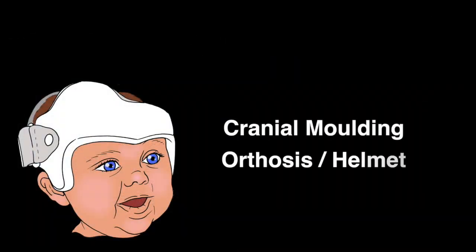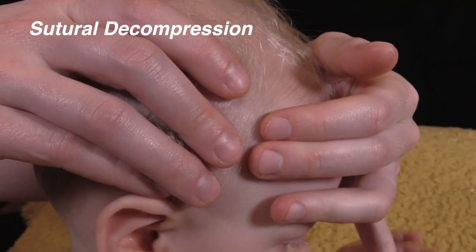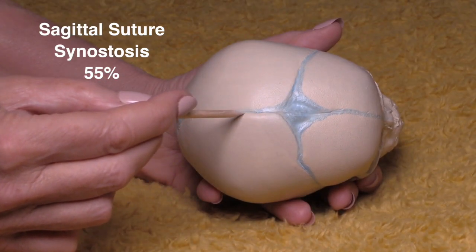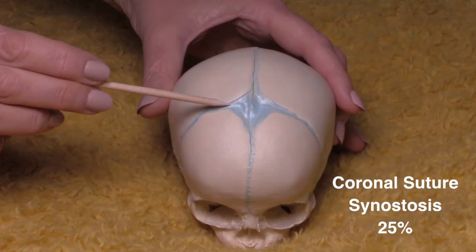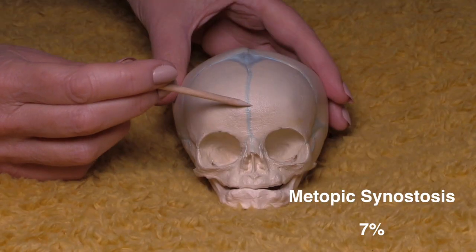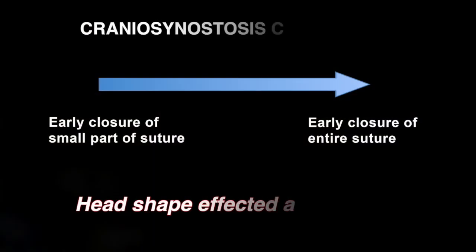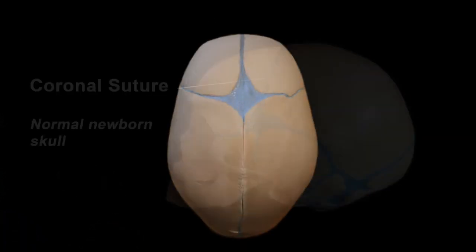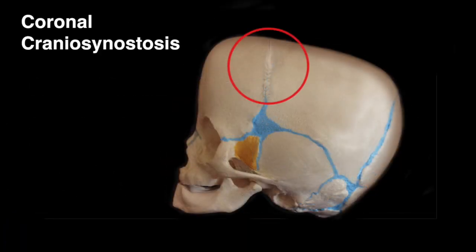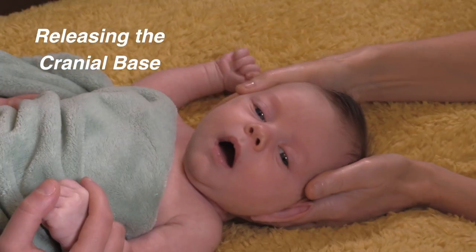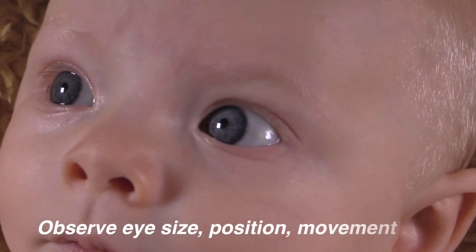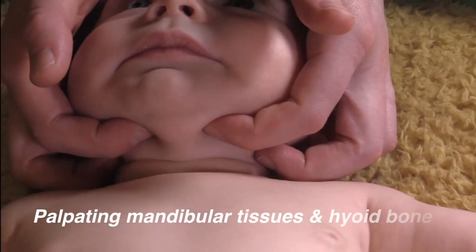Through unique visual material and live-action shot on our real-life babies, we explore the definition, etiology and typical features of positional plagiocephaly and the more serious craniosynostosis. We review the relevant anatomy and discuss treatment options for positional plagiocephaly.